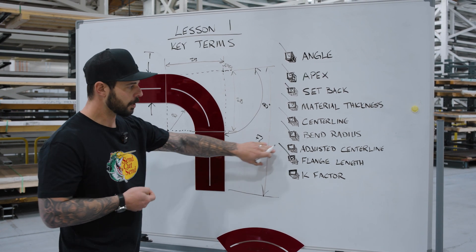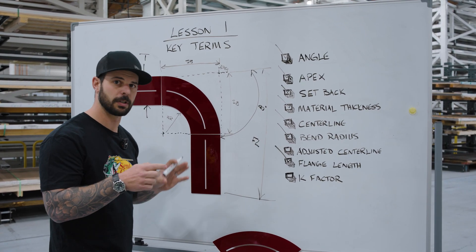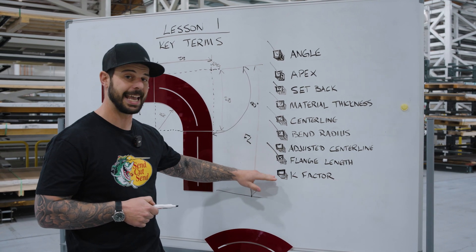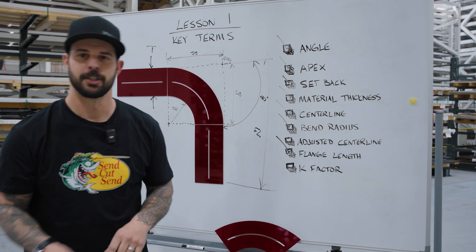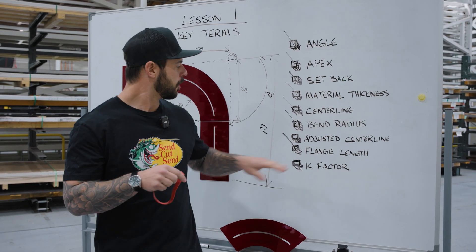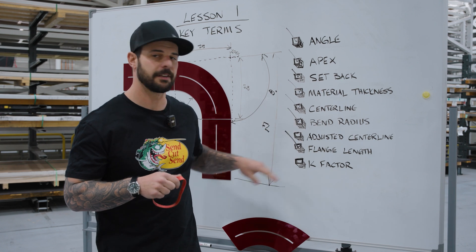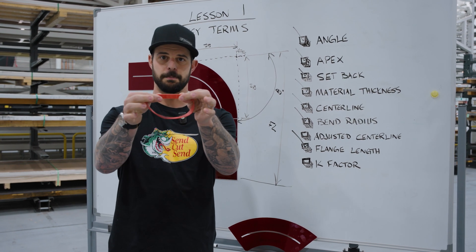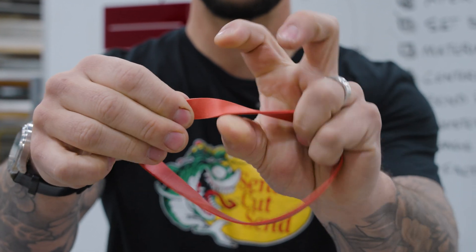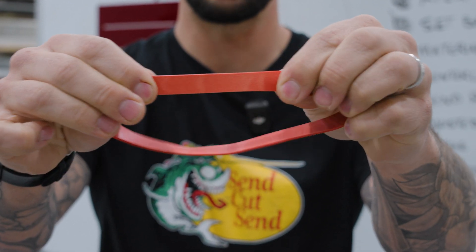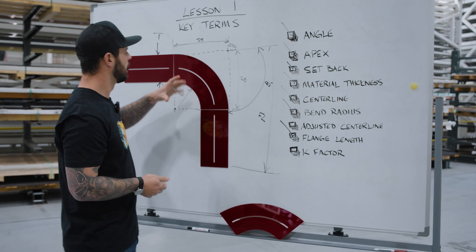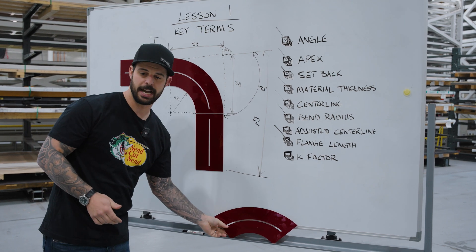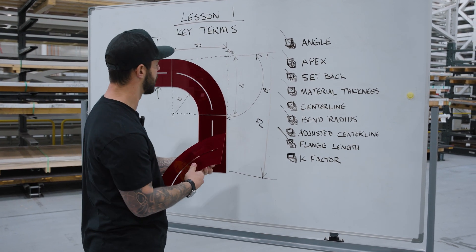We're going to go into two more technical terms: adjusted centerline and K factor. I'm going to use this rubber band to illustrate what I'm talking about. As I stretch out the rubber band, we can see it gets thinner in that profile. The same exact thing happens when we're bending a part — when we bend it, it's going to thin out. I have a different piece here to demonstrate this.